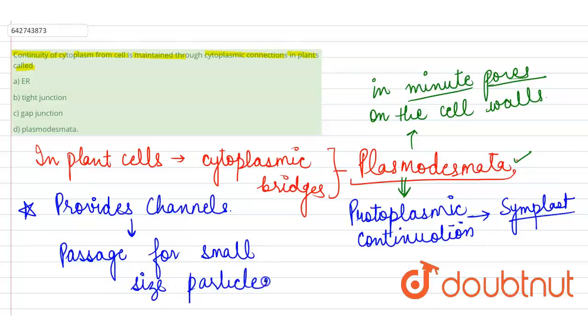This was about the cytoplasmic bridges in case of plants that are known as plasmodesmata. Now, if we come to the options, option A says,